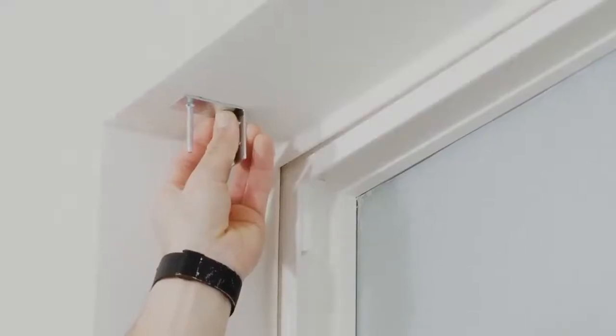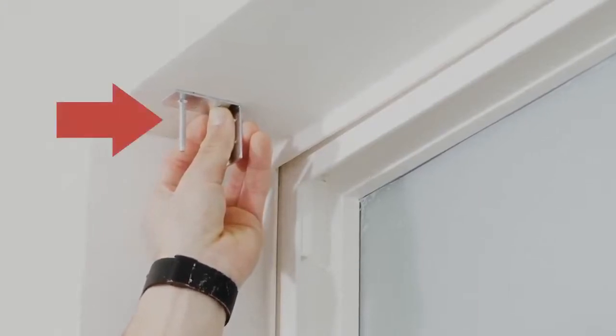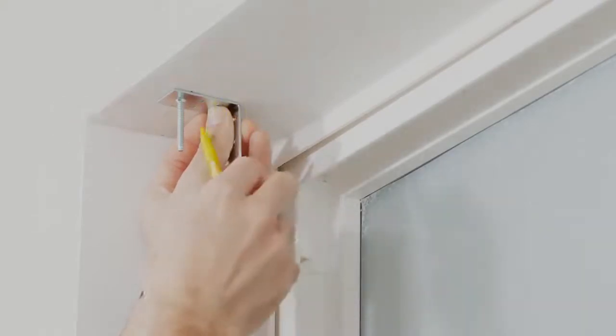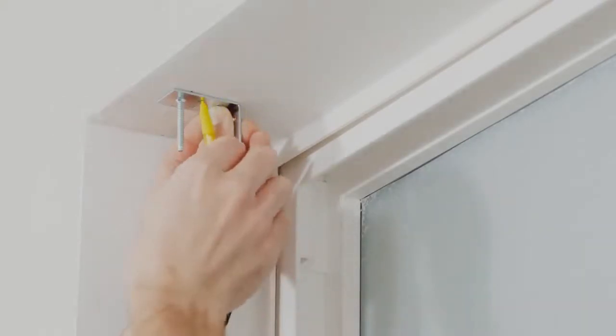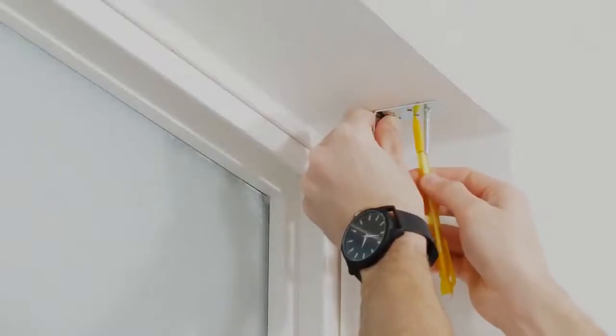Starting on the left side of the window, take a bracket and with the bolt facing down, position it over your mark. Using the holes in the bracket, mark the two spots where you'll insert the mounting screws. Do the same to position the bracket on the right side.